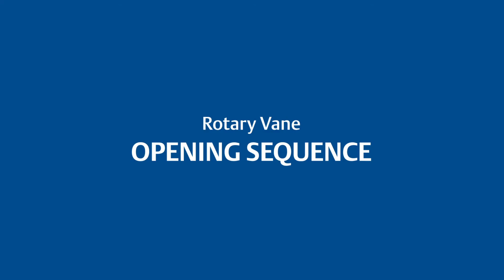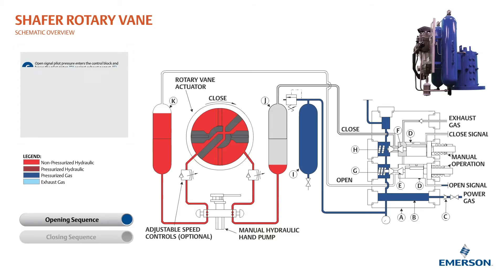This is the theory of operation for the opening stroke for the Schaefer rotary vane actuator. Open signal pilot pressure enters the control block and forces the pilot piston against the exhaust poppet, forcing it onto its seat. The power poppet is then forced off of its seat.